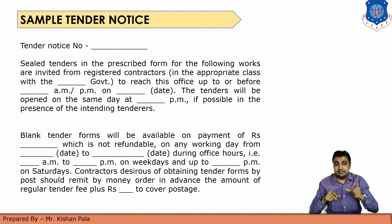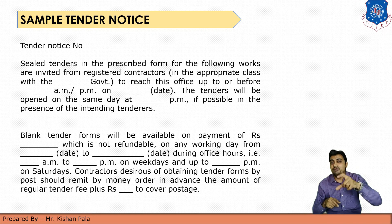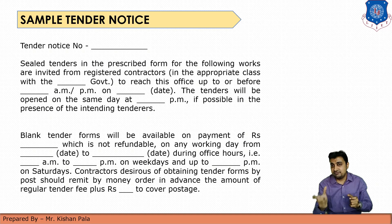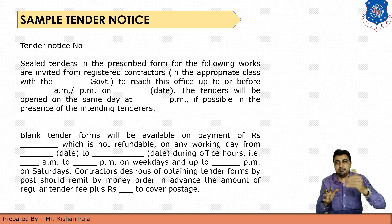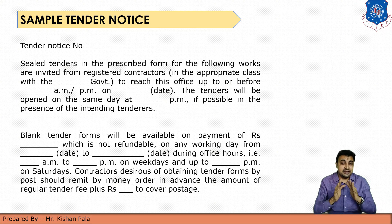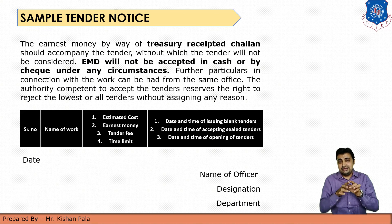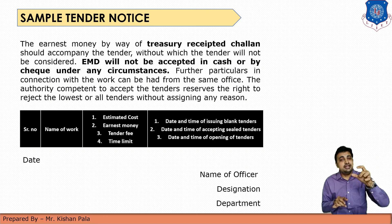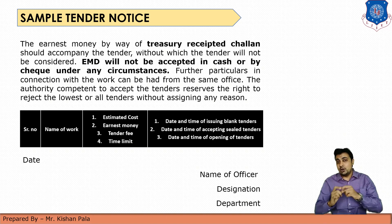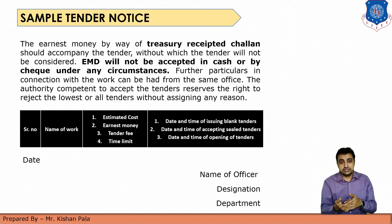The second paragraph shows that blank tender forms will be available on payment of a particular amount, which is not refundable — generally 2,000 to 5,000 rupees depending on the type of work. In the last paragraph, it shows that the earnest money deposit, EMD, must be paid by treasury receipt. You cannot pay the EMD by cheque or cash — that is not allowed in the tendering process. If the EMD is not filled, the tender will be rejected.